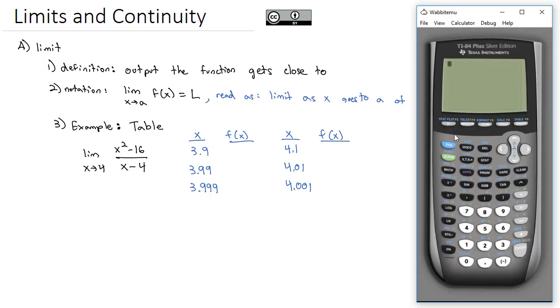We can do all of this really quickly on our calculator if we hit the y equals button and type in the function we're interested in. Remember, I need parentheses around the numerator as I say x squared minus 16, close the parentheses of the numerator, divided by the x minus 4, and close the parentheses.